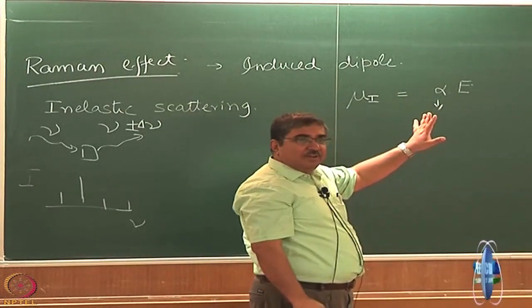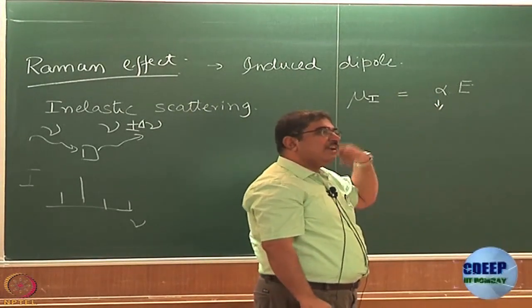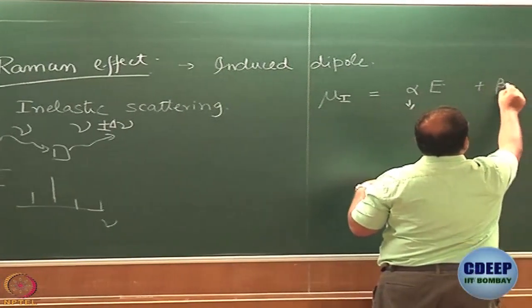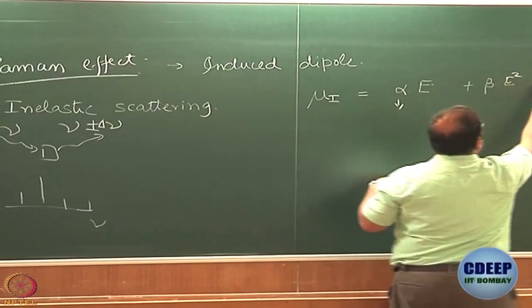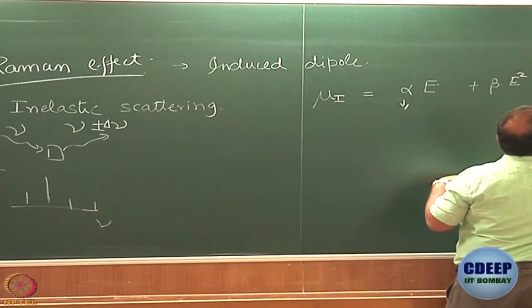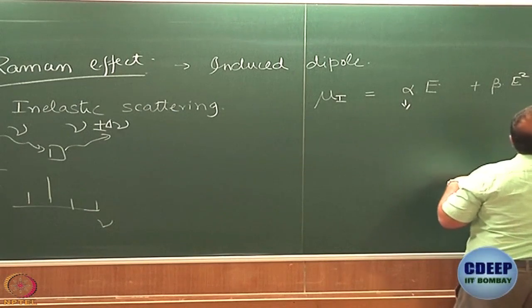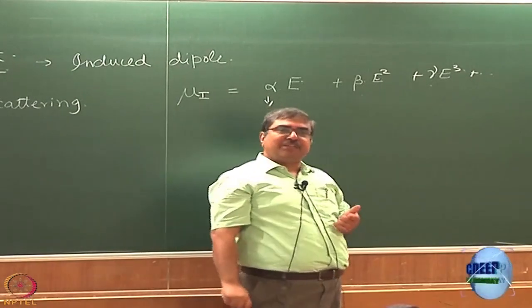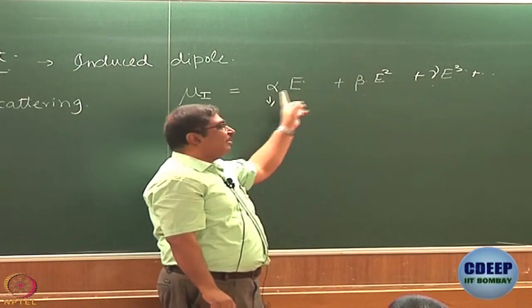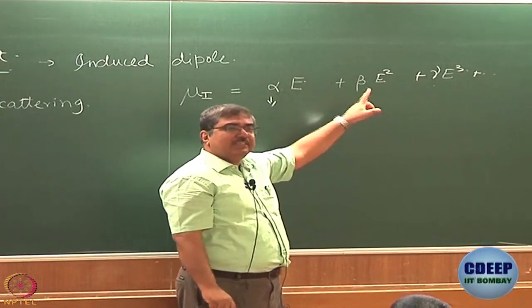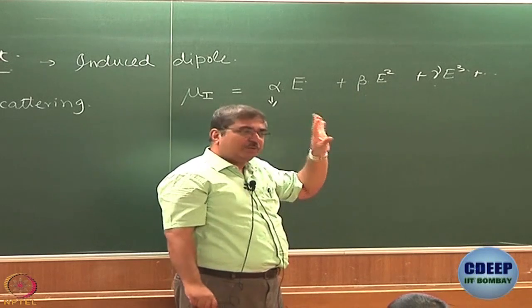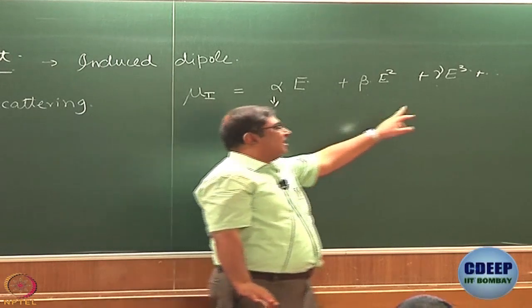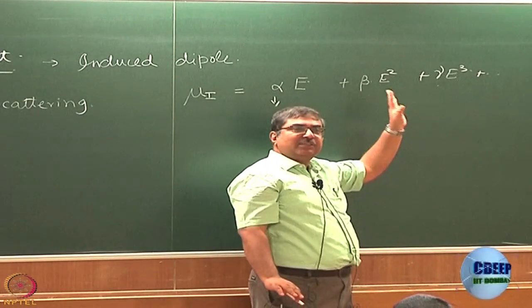But this is not all — you can have higher-order terms in E as well. You can write: mu_i = alpha·E + beta·E² + gamma·E³ and so forth. When you go from alpha to beta, there is a huge decrease in value; beta is much smaller than alpha, and gamma is much smaller than beta.